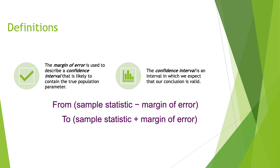The confidence interval is an interval in which we expect our conclusion is valid. It always goes from the statistic minus the margin of error to the statistic plus the margin of error. For example, if you thought there was a 51% chance that a particular candidate was going to win office, but there was a 3% margin of error, we would say the probability goes from 48% to 54% — that is, 51% plus or minus 3%.